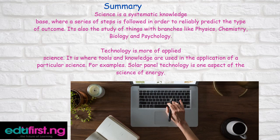In summary, science is a systematic knowledge base where a series of steps is followed in order to reliably predict the types of outcome. It is also the study of things with branches like physics, chemistry, biology, and psychology. Technology, on the other hand, is more of applied science — it is where tools and knowledge are used in the application of a particular science. For example, solar panel technology is one aspect of the science of energy.